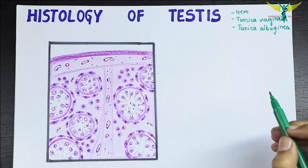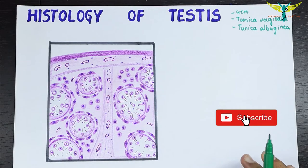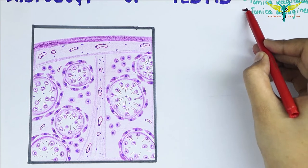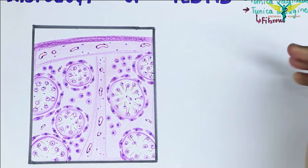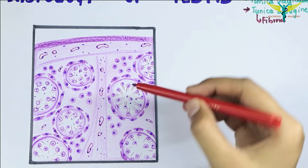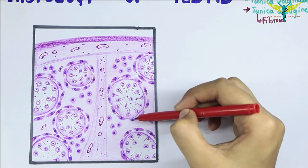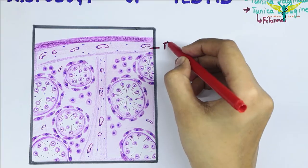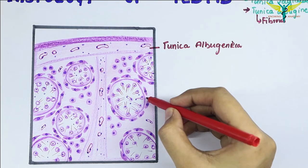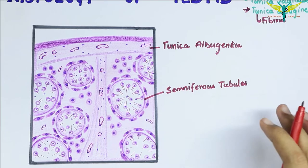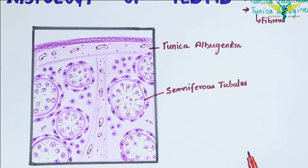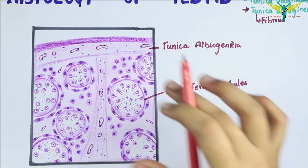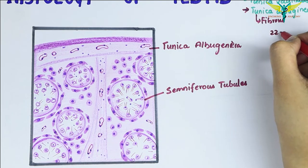Coming to the proper histology of the testis, the testis has an outer fibrous layer called the tunica albuginea, and deep to this tunica albuginea we can see a number of seminiferous tubules cut in cross-section. This hole is the seminiferous tubule, and we can see many seminiferous tubules here. The seminiferous tubules are highly convoluted structures present in each lobule of the testis. It is estimated that each testis contains about 200 lobules.